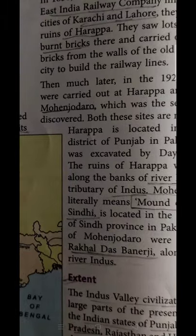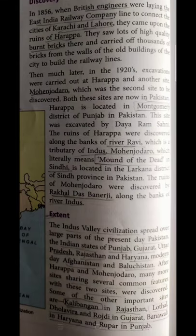Later in 1920, excavations revealed that Harappa had another site as well. The first site is Harappa and the second site is Mohenjodaro. Mohenjodaro is now in Pakistan and Harappa is located in the Montgomery district of Punjab, Pakistan. The discovery of Indus Valley Civilization is traced to Daya Ram Sahni. The ruins of Harappa were discovered along the river Ravi, a tributary of Indus. Mohenjodaro literally means 'Mound of the Dead' in Sindhi. It is located in the Larkana district of Sindh province in Pakistan, and its ruins were discovered by Rakhal Das Banerji along the river Indus.